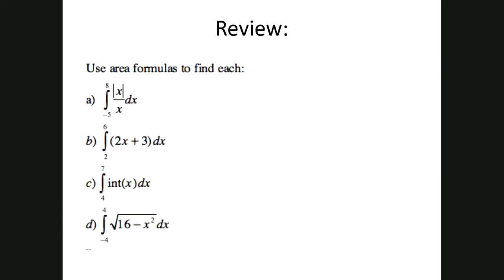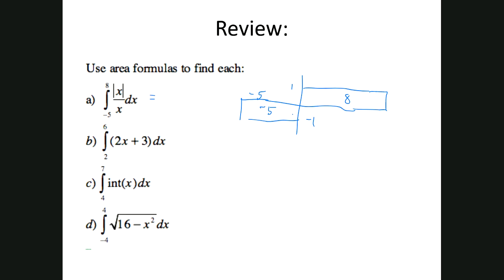Last week we talked about finding the integrals or area underneath curves using formulas - area formulas. There was nothing last week where I wanted you to use taking the antiderivative. In this type of problem, I've got the absolute value of x over x. I know what that graph looks like - positive 1 above, negative 1 below. Going from negative 5 to 8: negative 5 times 1 is negative 5, plus 8. So negative 5 plus 8 is 3. The integral from negative 5 to 8 of the absolute value of x over x is just 3. You should be able to do simple functions using geometry.